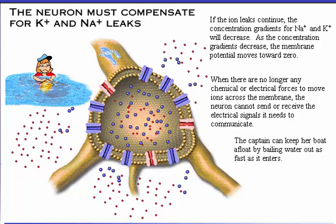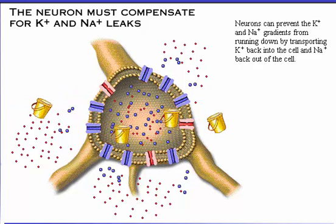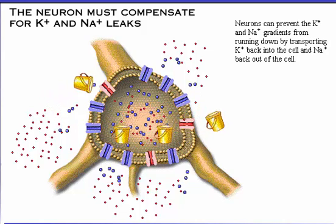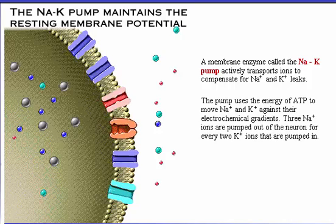The captain can keep her boat afloat by bailing water out as fast as it enters. Neurons can prevent the potassium and sodium gradients from running down by transporting potassium back into the cell and sodium back out of the cell. A membrane enzyme called the sodium-potassium pump actively transports ions to compensate for the sodium and potassium leaks. This pump uses the energy of ATP to move sodium and potassium against their electrochemical gradients. Three sodium ions are pumped out of the neuron for every two potassium ions that are pumped in.